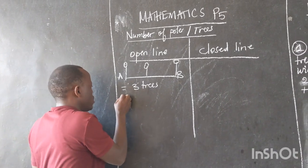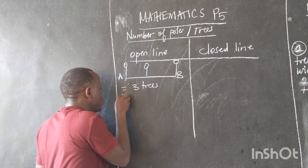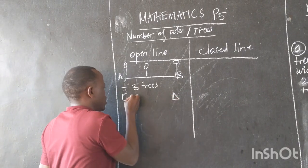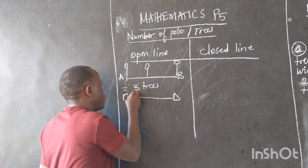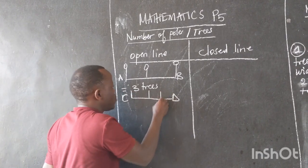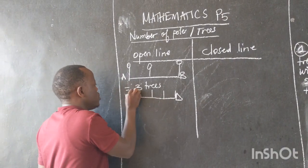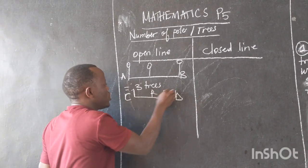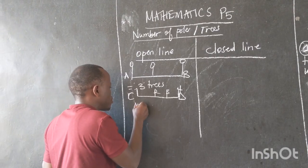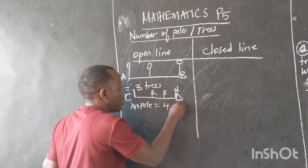For example, from road C to road B, we have different poles. This is a pole, this is also a pole, this is also another pole, and this is also another pole. So the number of poles is equal to four poles. And here we have three trees.